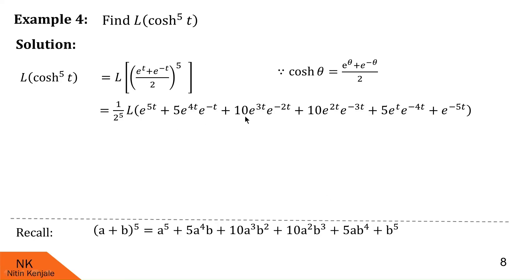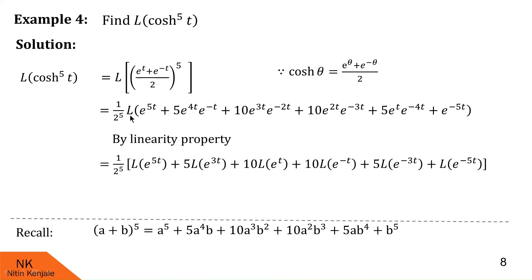Simplifying: e^(4t)·e^(−t) = e^(3t), and similarly: e^(3t)·e^(−2t) = e^t, e^(2t)·e^(−3t) = e^(−t), and e^t·e^(−4t) = e^(−3t). So the simplified terms are e^(5t) + 5e^(3t) + 10e^t + 10e^(−t) + 5e^(−3t) + e^(−5t). Using linearity property, we apply Laplace on every term.